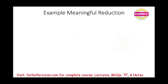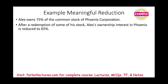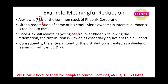Example: Alex owned 75% of the common stock of Phoenix. After the redemption, his ownership went from 75% to 65%. Alex still maintains voting control, so he cannot argue this is a meaningful reduction — the 10% redemption will be considered a dividend (assuming sufficient E&P). However, if Alex goes from 75% to 40%, he might argue he is no longer in control and request the transaction be treated as a sale. This remains a subjective determination.